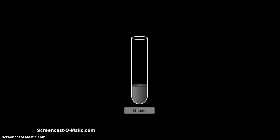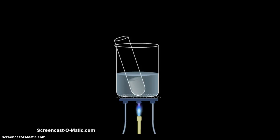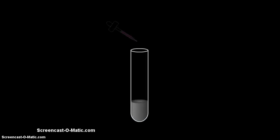Take a small amount of ethanol in a test tube and place it in a water bath. Now, add a 5% aqueous solution of alkaline potassium permanganate, drop by drop to the test tube. The purple color of potassium permanganate disappears due to the oxidation of ethyl alcohol to acetic acid.